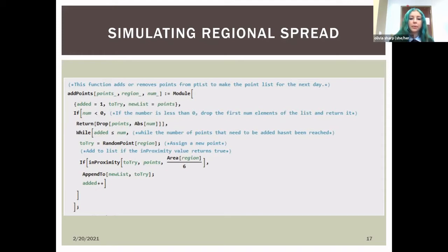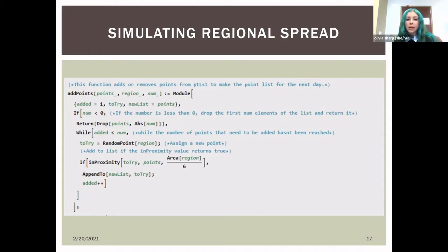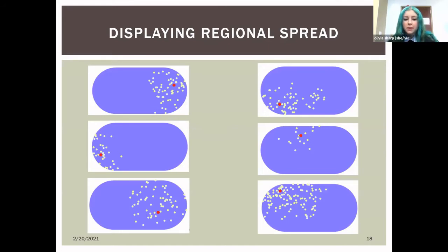Here are examples of what that looks like. Our red points depict the first infection, and most infections start clustered around that initial point, spreading out gradually from there.